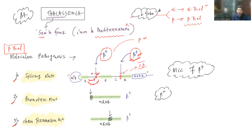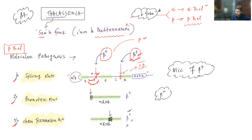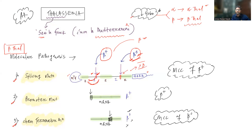Chain termination mutations cause abnormal premature termination of translation before the actual stop codon, so no beta globin is produced — they produce the beta zero type of phenotype. Chain termination mutation is the most common cause of beta zero. To summarize: beta plus means some beta globin production is possible; beta zero means no beta globin production. The most common cause for beta plus is splicing mutations; for beta zero it is chain termination mutations.